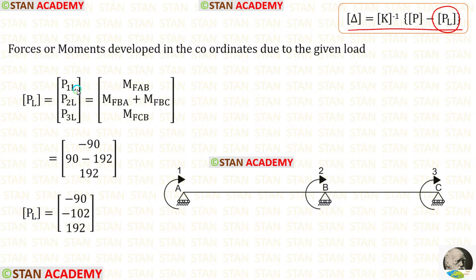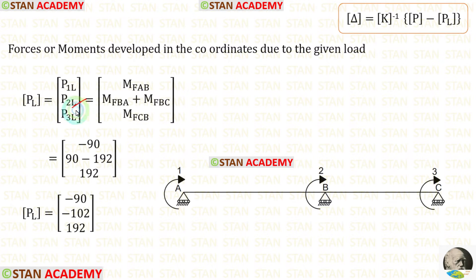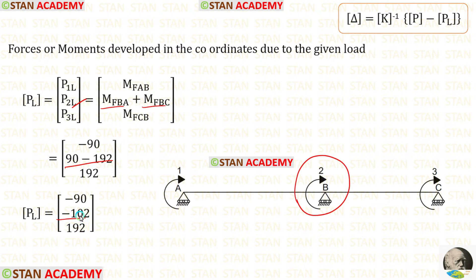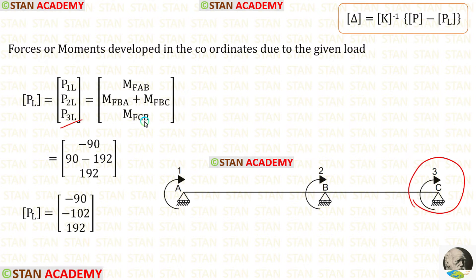Now let us find the PL matrix. First let us find P1L. Our first coordinate is at point A, where we have calculated the fixed end moment M_AB — let us apply that. For P2L, our second coordinate is at point B, where we have found two fixed end moments: M_BA and M_BC. We have to add both of them; after adding we get minus 192. Now for P3L, our third coordinate is at point C, where we have the fixed end moment M_CB — let us apply that.